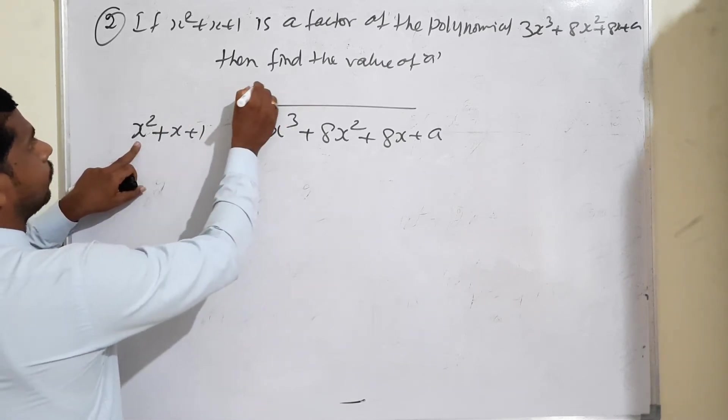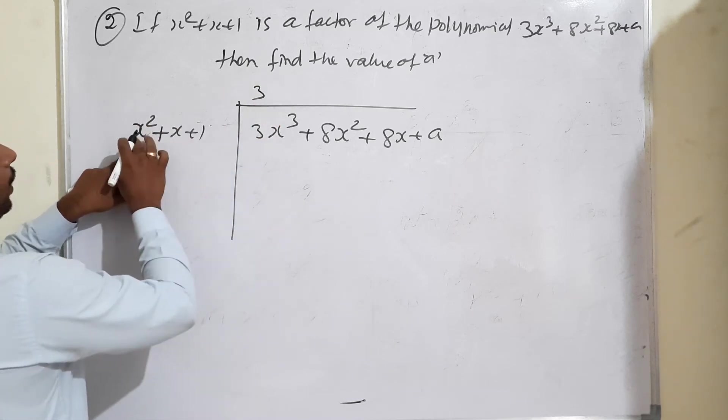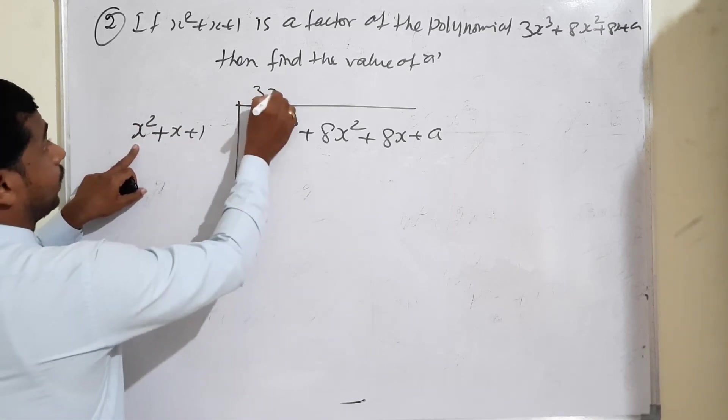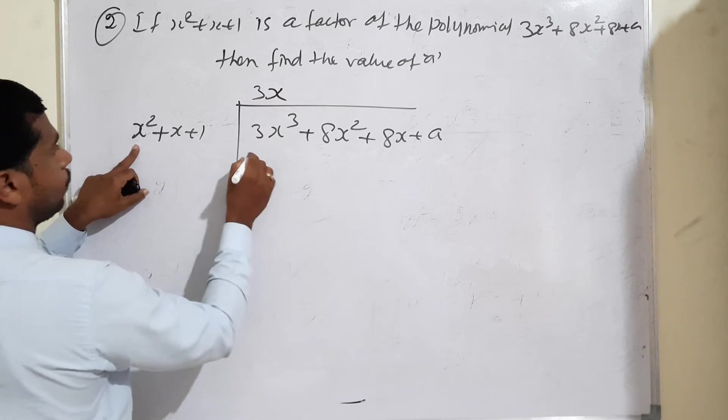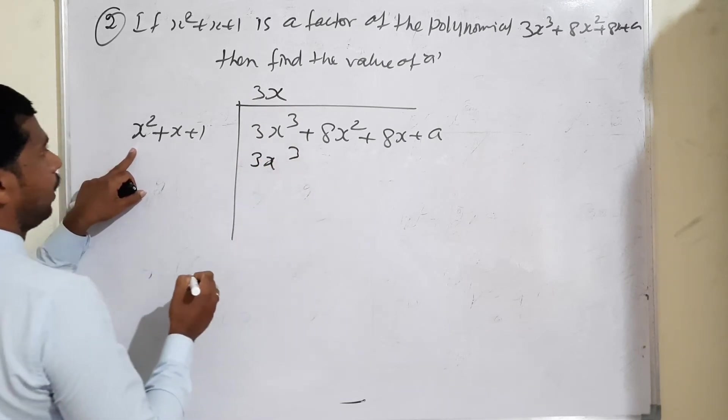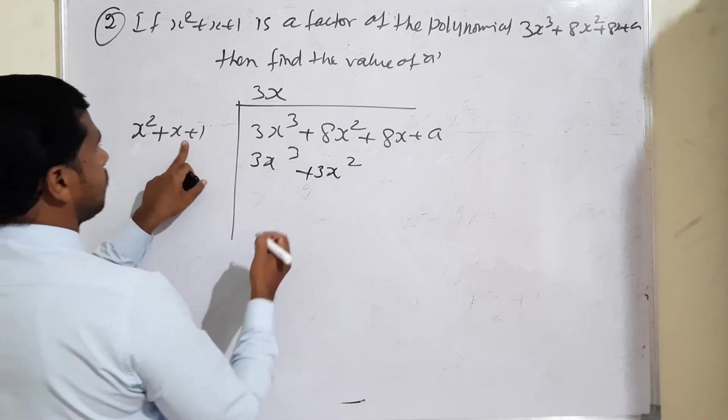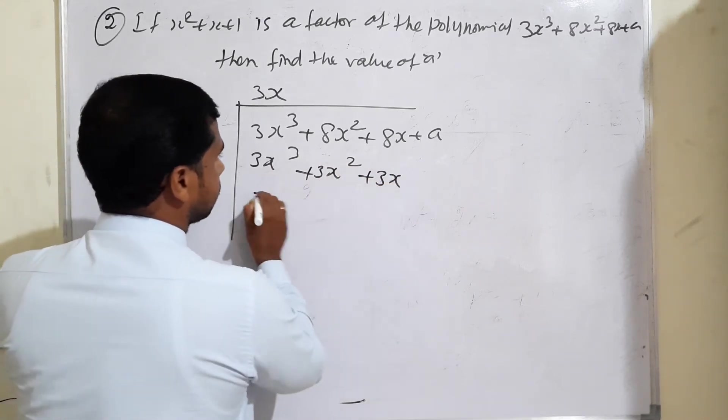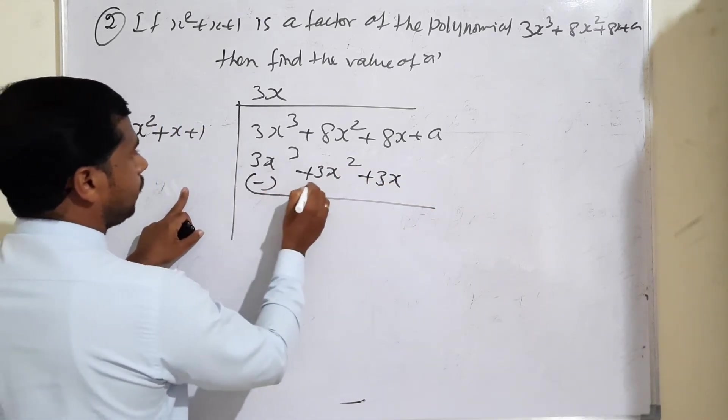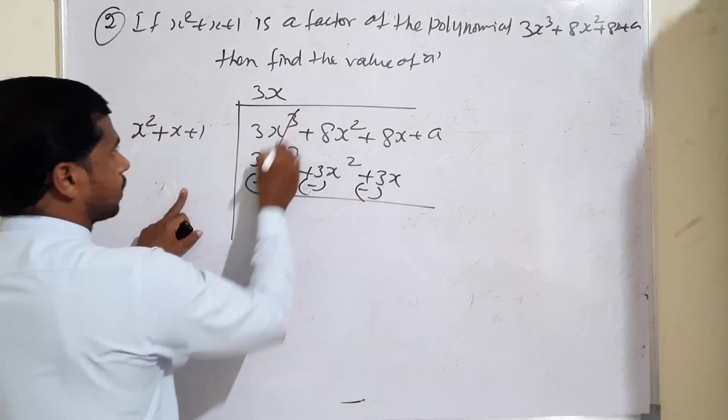Consider 3x. 3 times x² is 3x³. Then 3x times x is 3x², and 3x times 1 is 3x. Change the sign to subtract: minus 3x³, minus 3x², minus 3x.